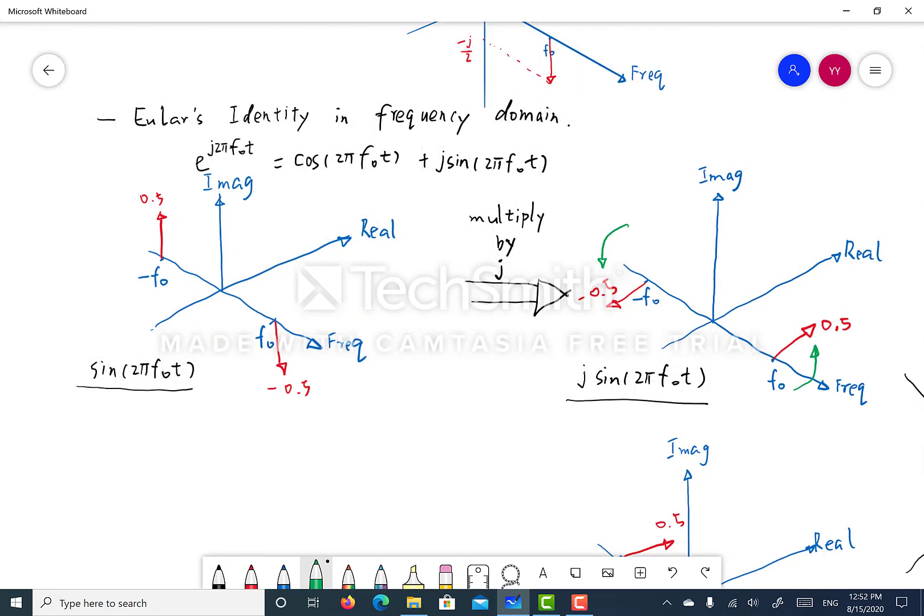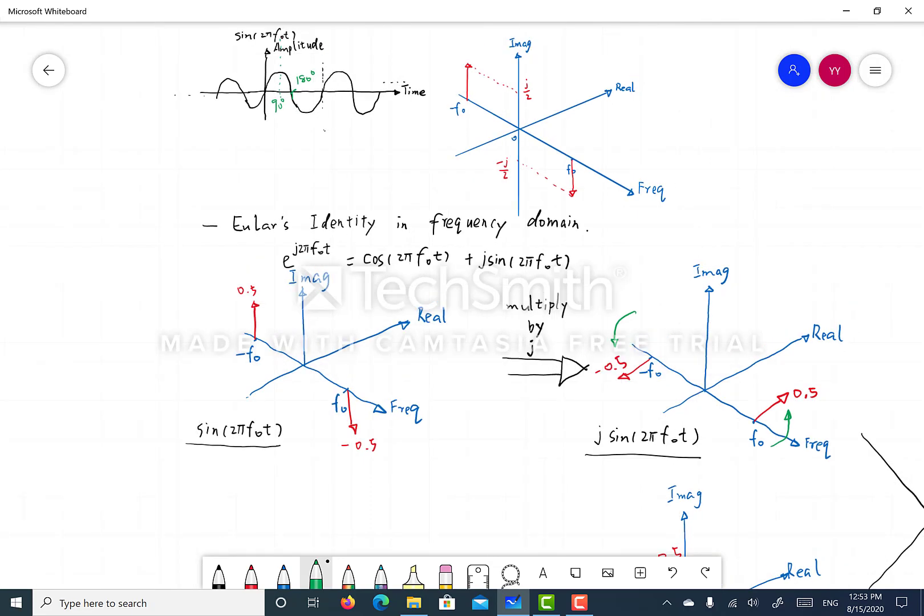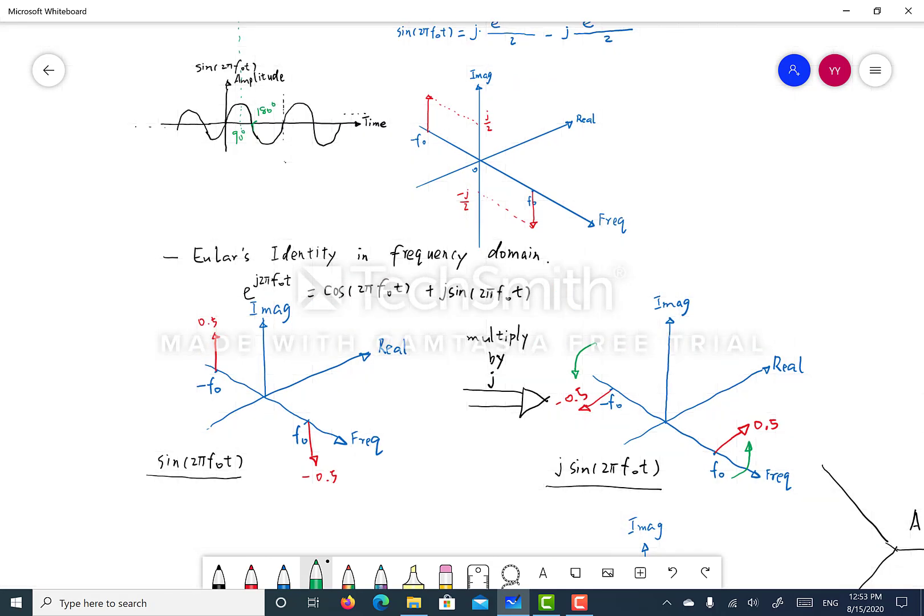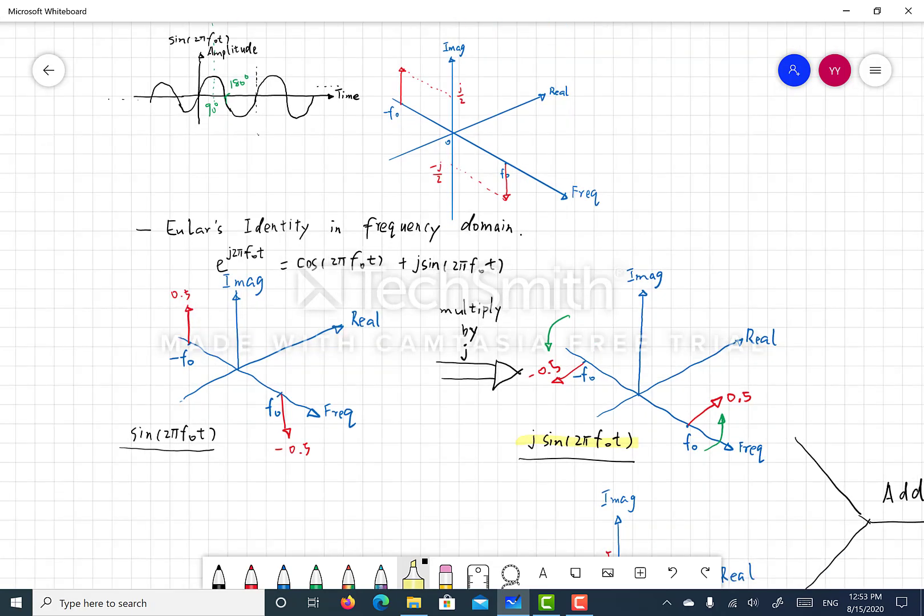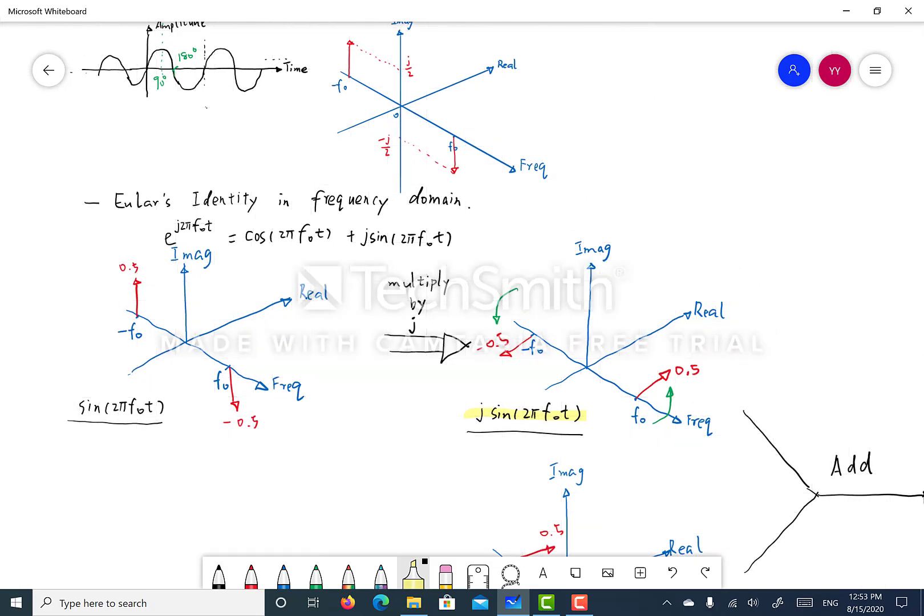So let's take another look at the Euler's identity, which we've covered in the time domain video, but here we want to scrutinize it in the frequency domain. So this is the frequency response of a sine wave. And if we multiply that sine wave by j, what we will get is j times sine 2 pi f0 t. And in the frequency domain, what really happened was that we're rotating the frequency response in the counterclockwise direction by 90 degrees.